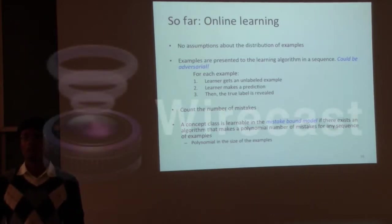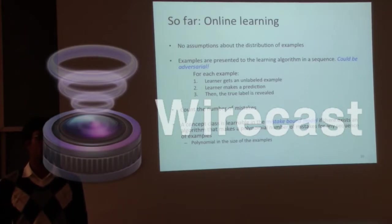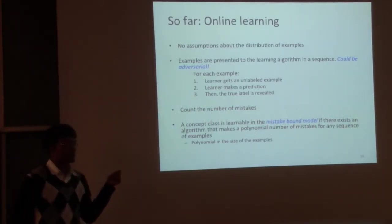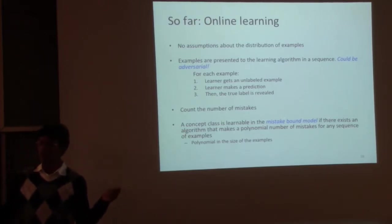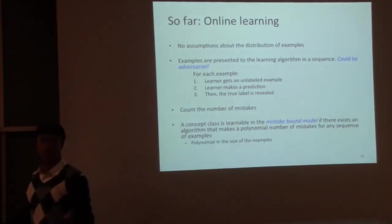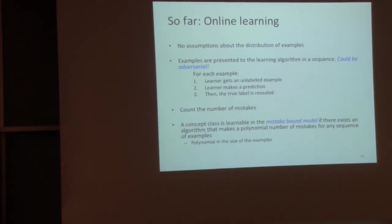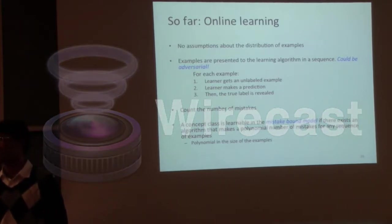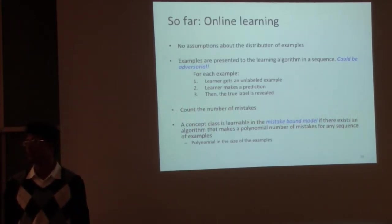If you are able to say that a concept class is learnable under a mistake-bound model with a particular algorithm, you also have a learning algorithm. But in general this is just an existential statement — if there exists any learning algorithm. The concept class is basically exponentially proportional to the number of dimensions. The halving algorithm makes log of the size of the concept class mistakes, so that's one of those cases where it works.